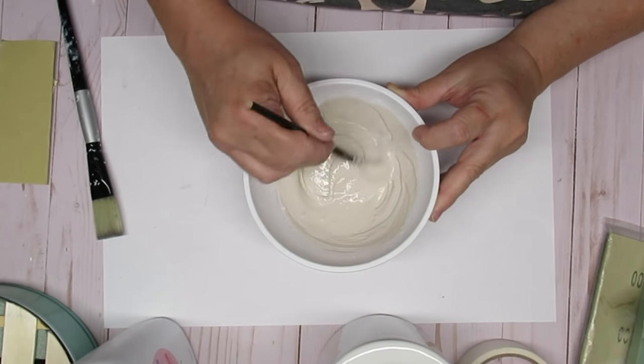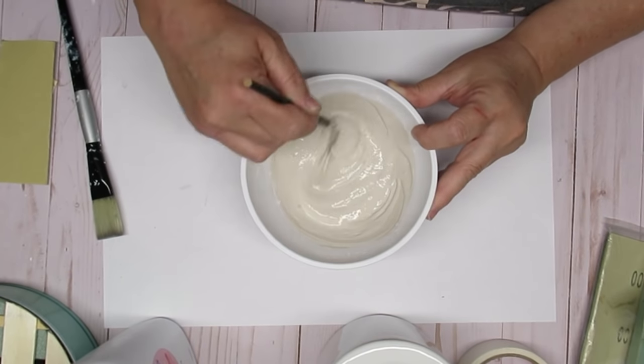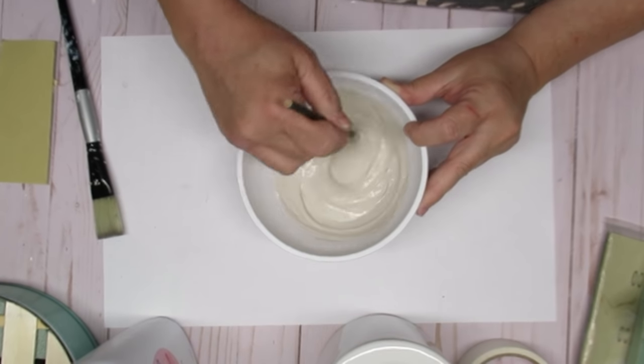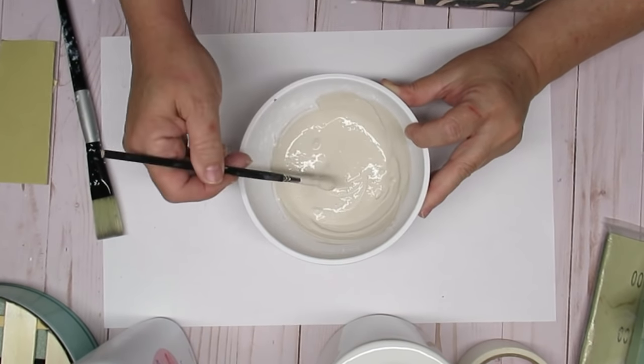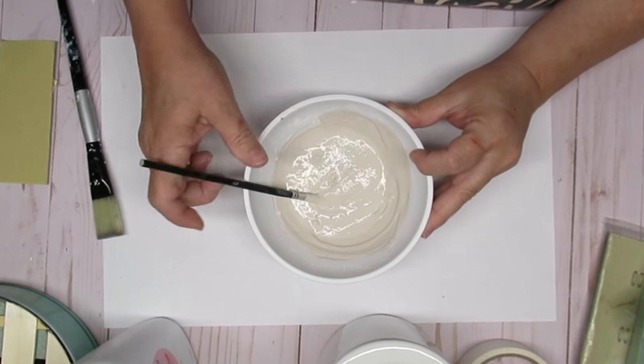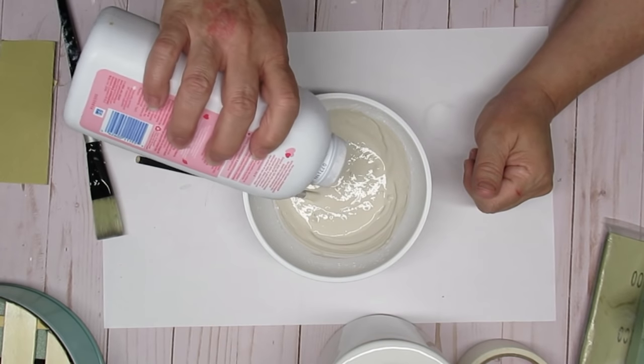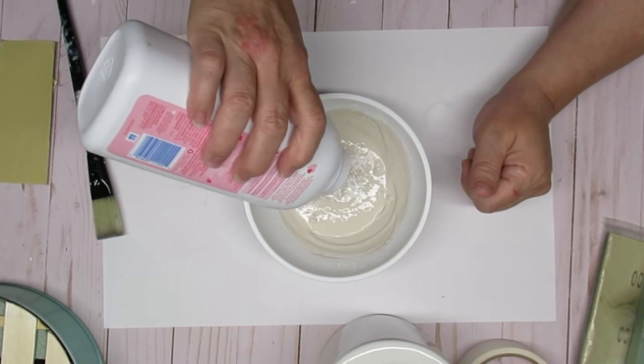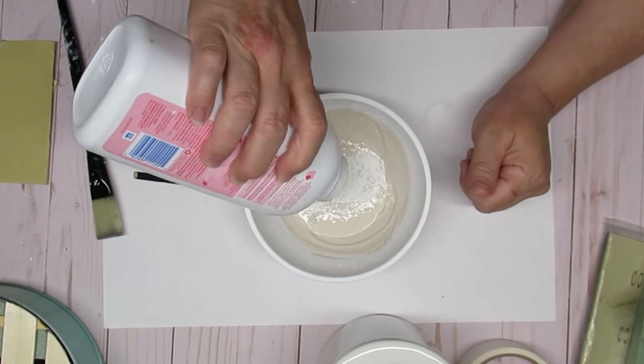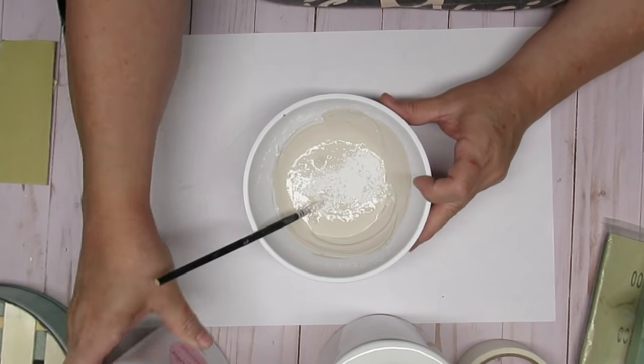Now there are different types of chalk paint out there and I like to do it so it's thick like Waverly or Folk Art. You want to be able to have it not drip off your brush. So I am now going to add just a little wee bit more, and it's also really a good idea to do little bits at a time, mix it in, and then add more as needed.